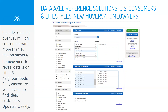Reference Solutions U.S. Consumers and Lifestyles and New Movers and Homeowners includes data on over 310 million consumers and 16 million recent movers and homeowners. Using the Advanced Search feature, you can fully customize your search to find hyperlocal information on ideal customers. After customizing, you can view results as a list, chart, or heat map. The default list results will generate lists of names, addresses, and landline phone numbers — no cell phone numbers. Clicking on a result will give you more detailed information on the person, like their general income range, home value, how long they've been in their home, and potential lifestyle interests.